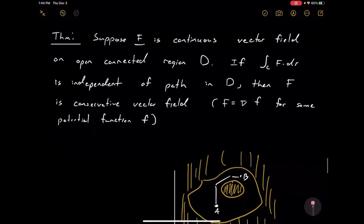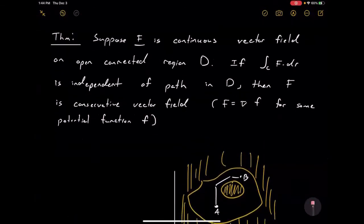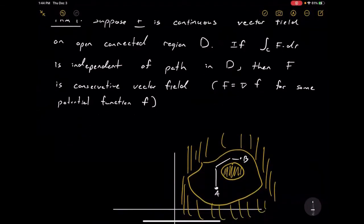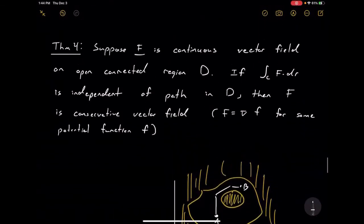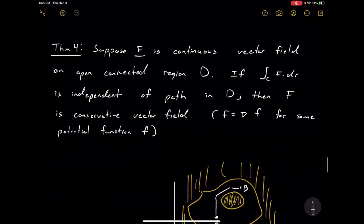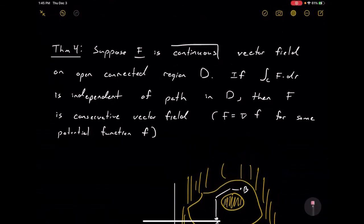The proof for this — theorem 4 in the book — is fairly interesting. It relies on independence of path to construct something we can differentiate to get our function F. It's pretty cool. As long as we have a continuous vector field on an open connected region: if it's conservative it's independent of path, and if it's independent of path it's conservative.